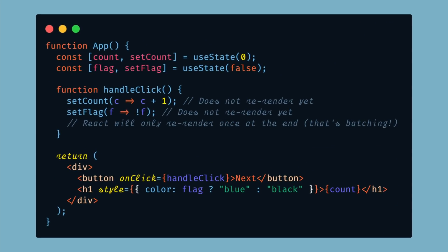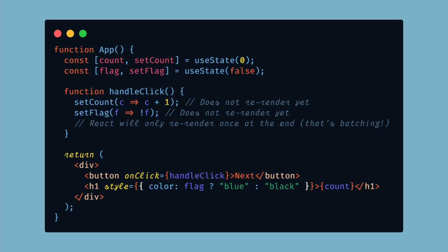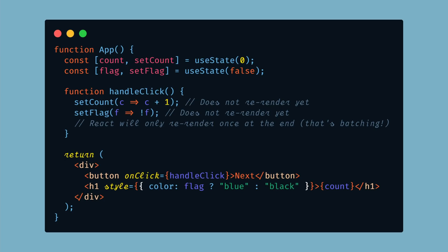In React 17 and earlier, React would batch re-render updates during a browser event like a click. In this handle click example from the docs, React batches two state updates into one single re-render. But if you need to fetch data and then update the state, those re-renders would not be batched. With React 18, if you're using the new createRoot API, all state updates will automatically be batched no matter when they happen. If you have a critical component you don't want batched, you can opt out using ReactDOM.flushSync.